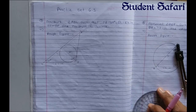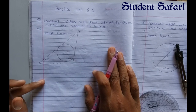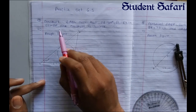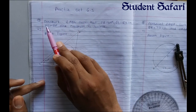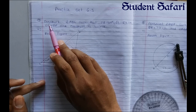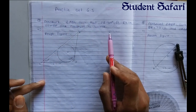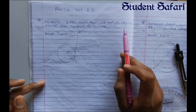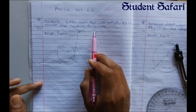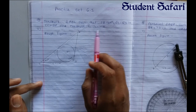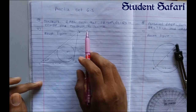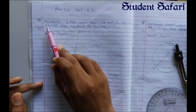Hello everybody, welcome to our channel Student Safari. In today's video we are going to see numericals of practice set 6.3. There are 4 to 5 numericals where we will see how to draw or construct the incircle and circumcircle of a triangle.